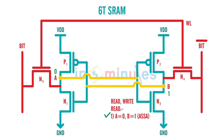So let's start the first step. What we need to do is make our word line high — meaning make it VDD. From our past learnings, if word line goes high, an nMOS transistor with a high input at its gate turns on. So this ensures that transistors N3 and N4 are turned on.